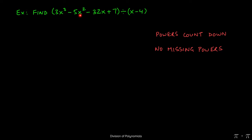And also that there are no missing powers. So here we have an x cubed, we have an x squared. Had this 32x not been here, that would have been the missing power. Since both conditions are satisfied, we can proceed with long division.